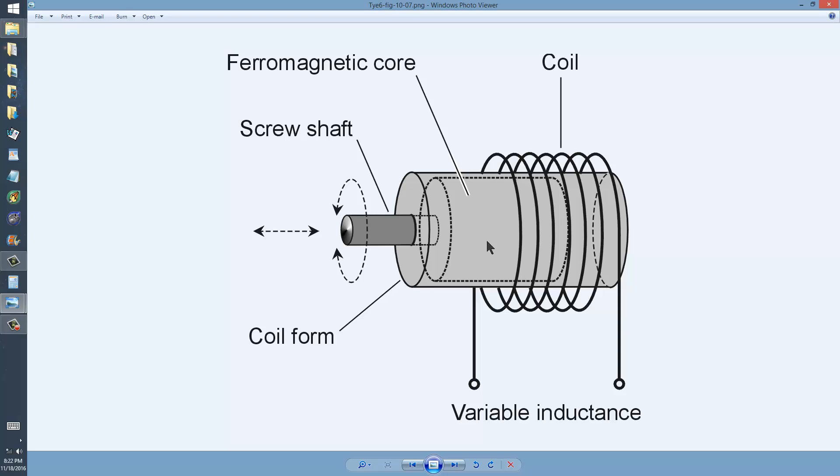It's also done to form an inductive counterpart to a trimmer capacitor, a trimmer inductor where you want a specific inductance but you want to be able to vary it just so that you can get its exact value and thereby align and adjust your circuitry accordingly.